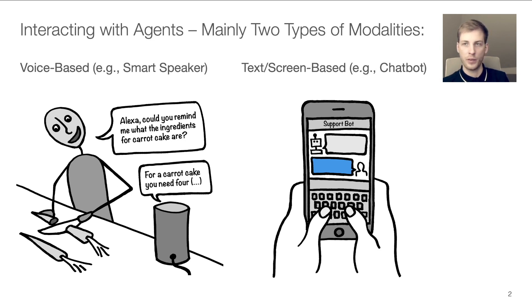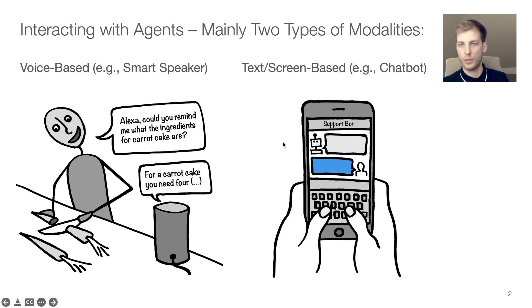When we interact with conversational agents, there are mainly two types of modalities: voice-based ones such as smart speakers, or text or screen-based ones such as chatbots.